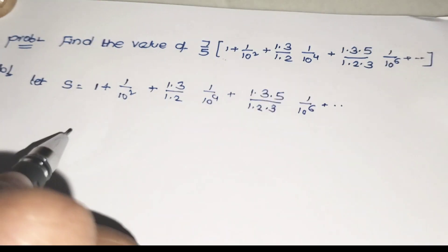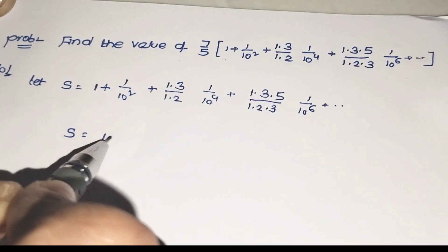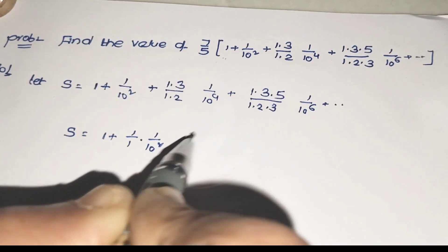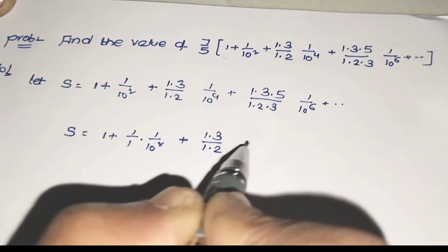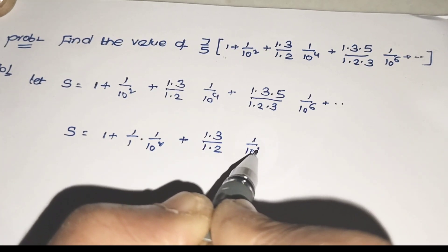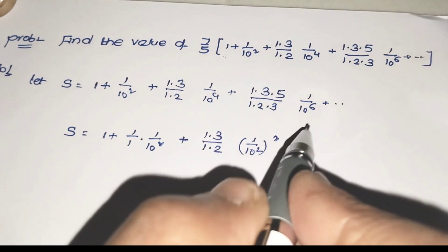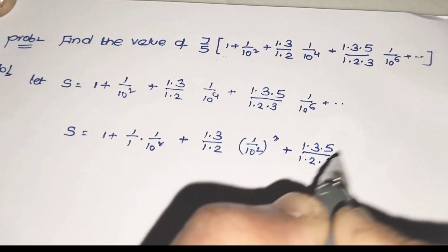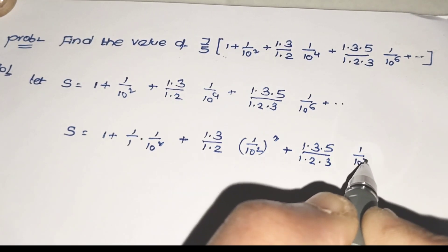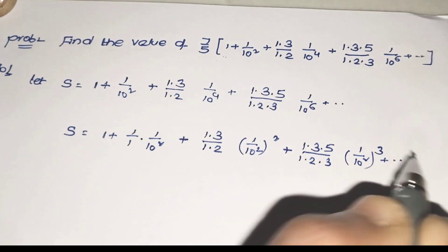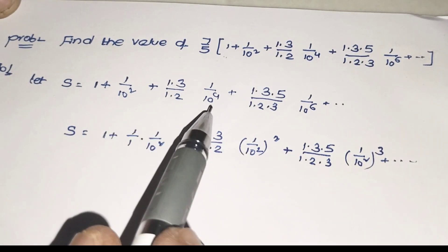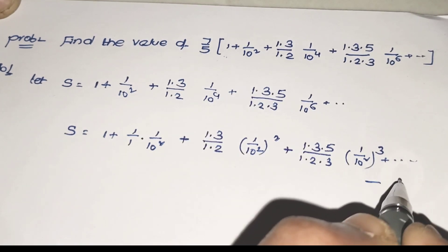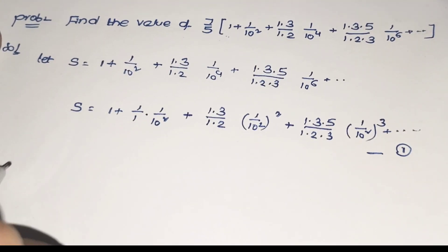Now rewriting this: s = 1/(1×1) × 1 + (1×3)/(1×2) × (1/10²)² + (1×3×5)/(1×2×3) × (1/10²)³ and so on. I am converting these values — 10⁴ is (10²)², 10⁶ is (10²)³ — so that we get the same base (1/10²) at all places. This is equation 1.